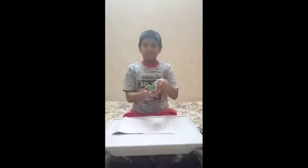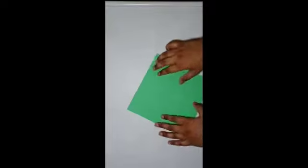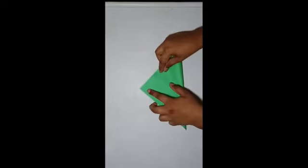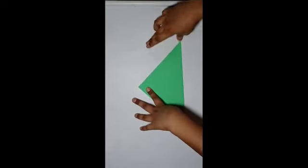So let's move to our traditional swan tutorial. First thing, take the colored side up and fold diagonally in half like this. Crease it sharply.